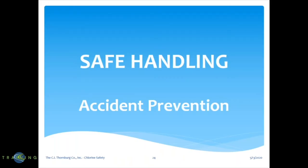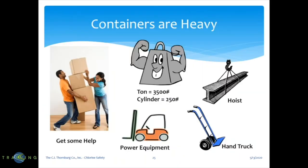Accident prevention. Containers are heavy — a full ton cylinder weighs roughly 3,500 pounds and a full 150-pound cylinder weighs roughly 250 pounds. Get some help. Use power equipment if you have it. Use hoists for ton cylinders and use your hand trucks.